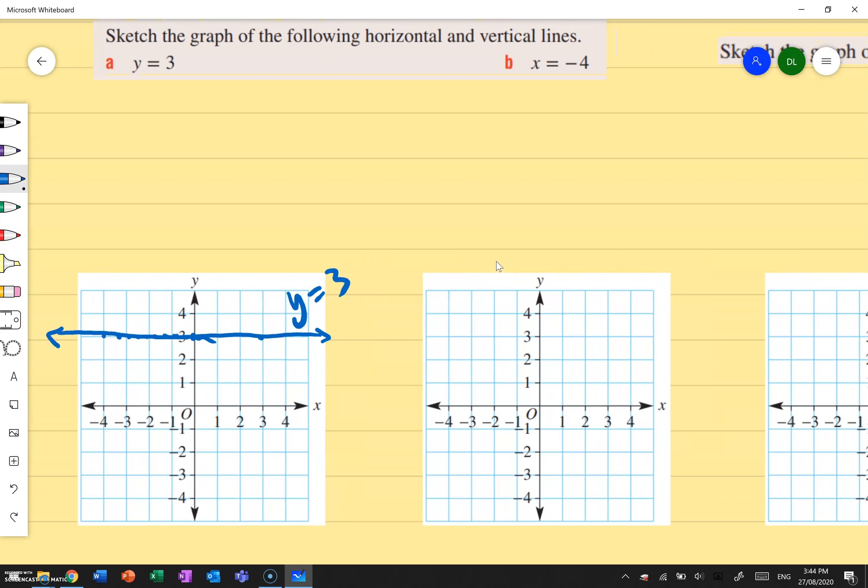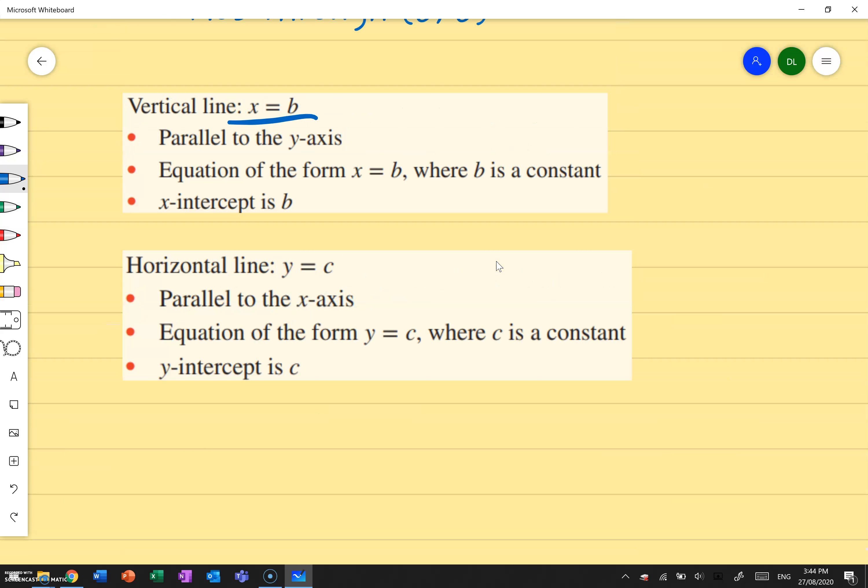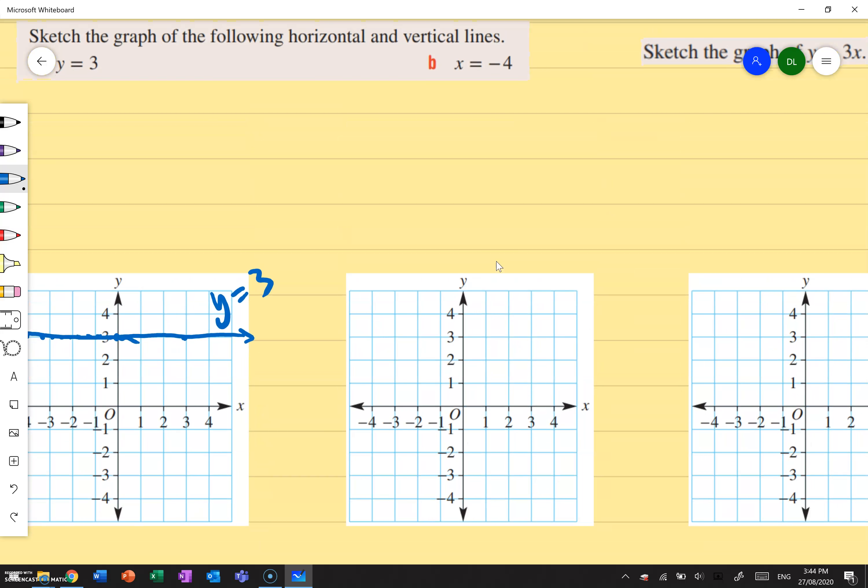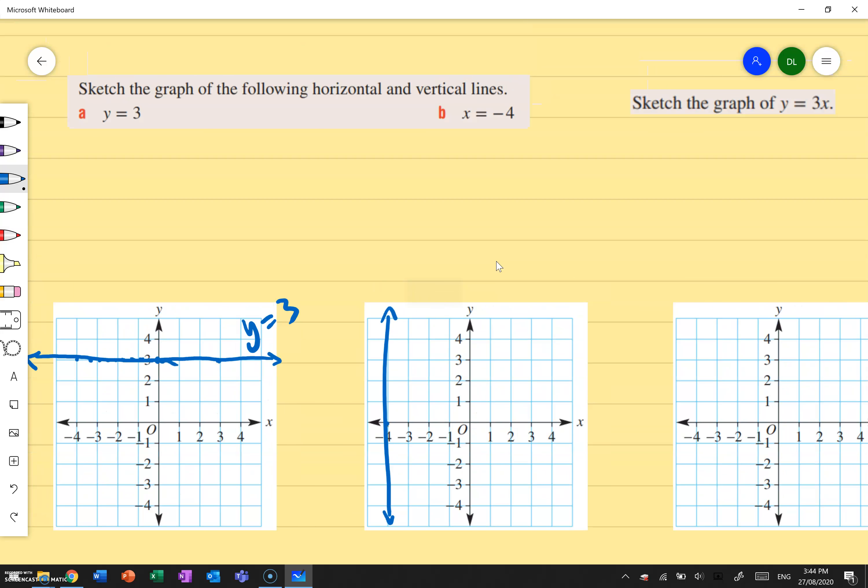If I do the similar idea for this one, x equals to negative 4, I know that x equals to something is going to be my vertical line. So I know that x equals negative 4, negative 4 is over here so my line looks like that. For whatever value of y, my x is always going to be negative 2. So that's the idea with horizontal and vertical lines.